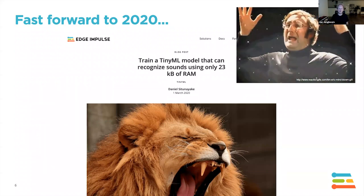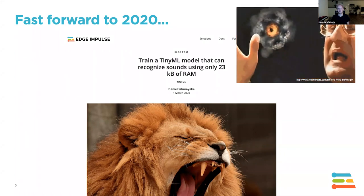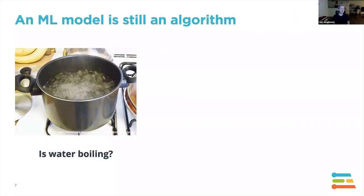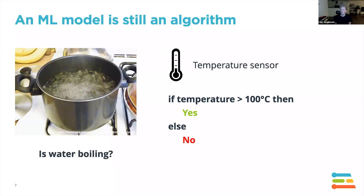How do we do something like this? I'd like to take a step back and see what an ML model actually is. Let's say you're building a device that needs to detect whether water is boiling. Water boils at 100 degrees Celsius, so naturally you attach a temperature sensor, write some code: if temperature is above 100 degrees, water is boiling, otherwise it's not. Very straightforward — inputs, an algorithm with some rules, and a conclusion.